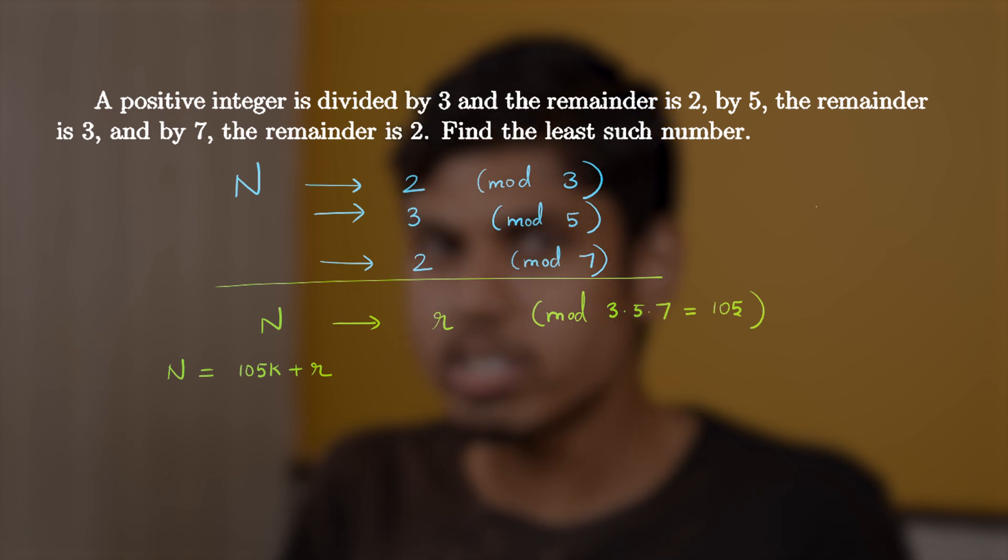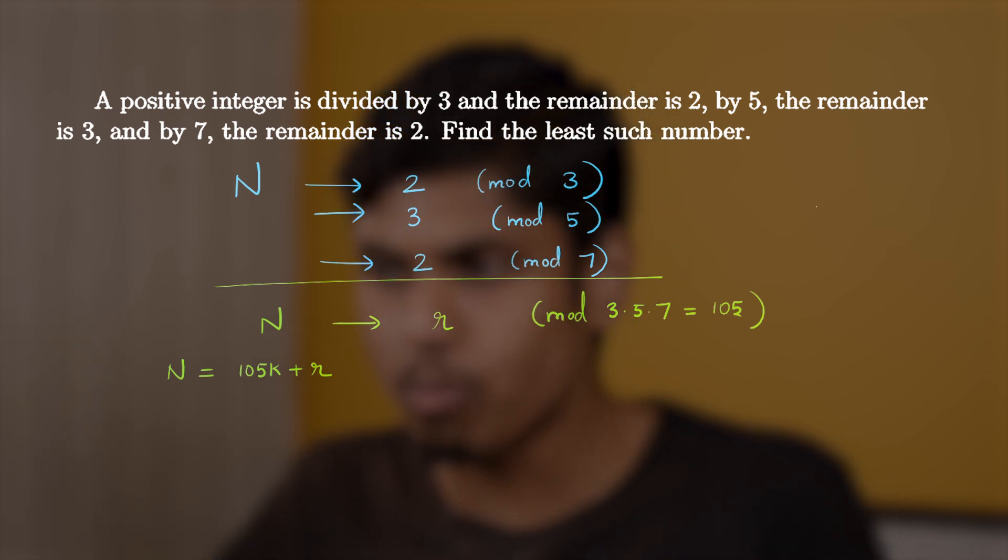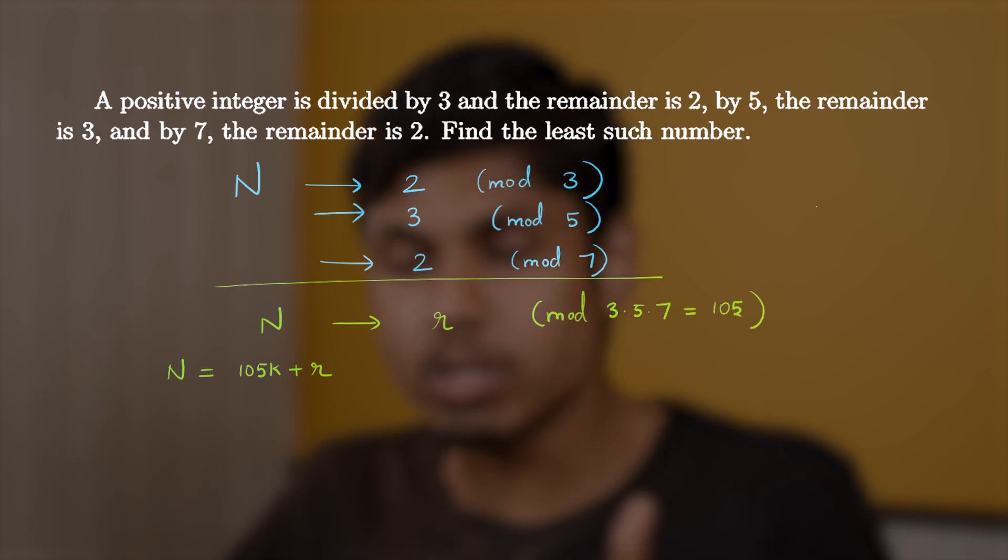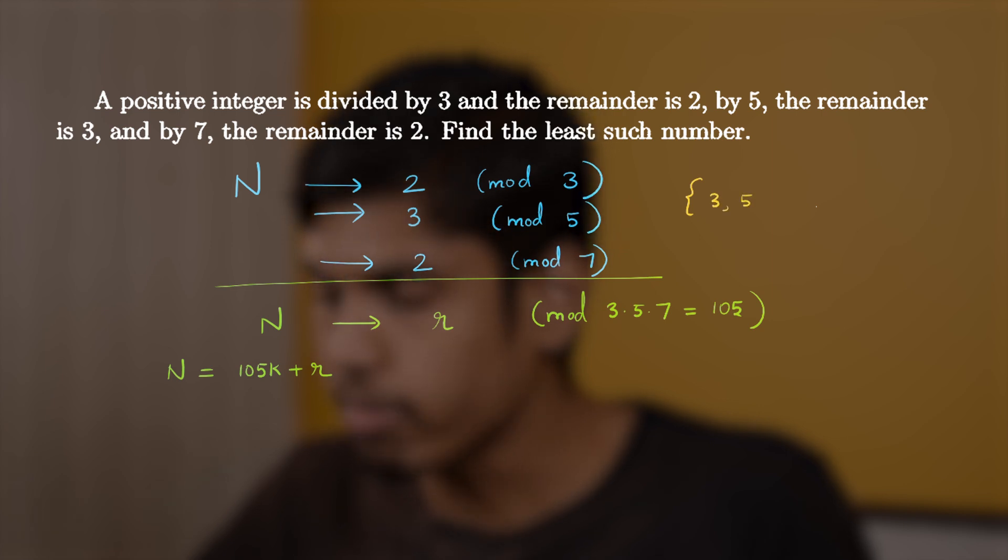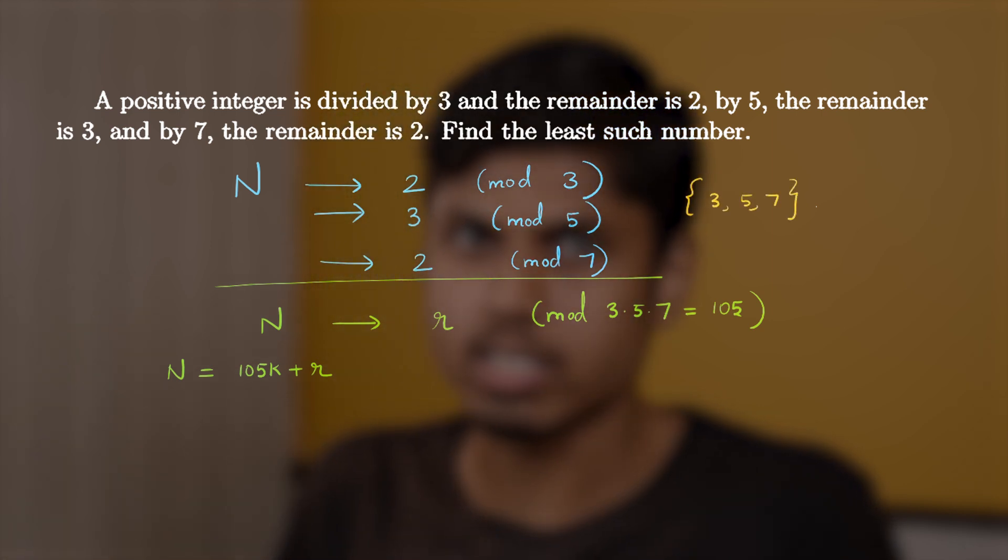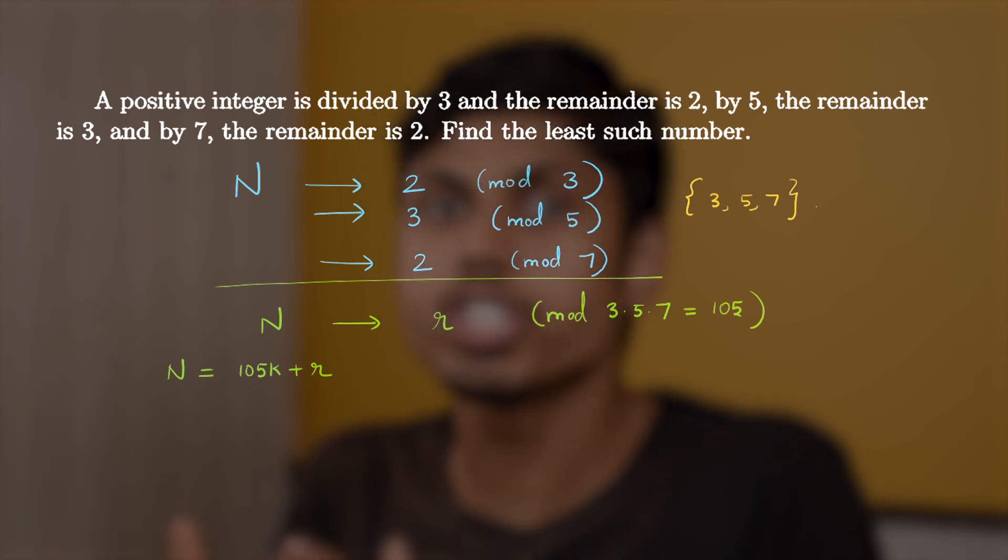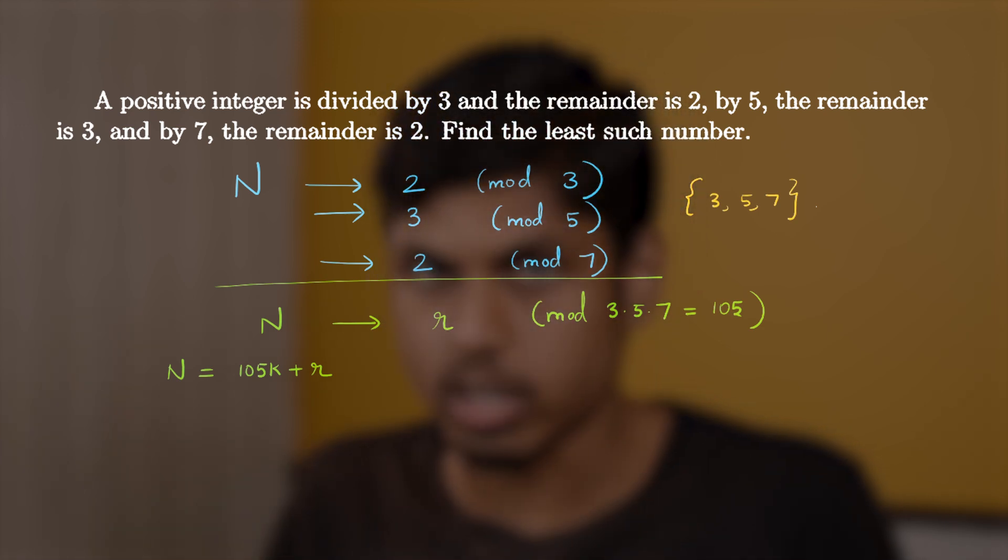And do notice that the numbers in the modulo or the numbers which are dividing n must be mutually co-prime. Here the numbers dividing capital N are 3, 5 and 7. And clearly they are mutually co-prime, right? That is not to share a common factor other than 1.